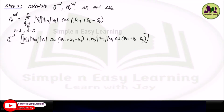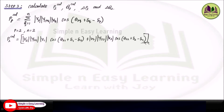Substituting all values: the first term (q=1) involves V2, Y21, V1, cos(θ21 + δ1 − δ2); the second term (q=2) involves V2, Y22, V2, cos(θ22 + δ2 − δ2). Substituting from the Y-bus and given data: V2 is 1 angle 0 (assumed in step 2), Y21 magnitude is 1.904, V1 is 1.05 as given, θ21 angle is 1.731, and all delta values are 0. For the second term, Y22 magnitude is 1.842, θ22 is minus 1.405, and the delta terms cancel.